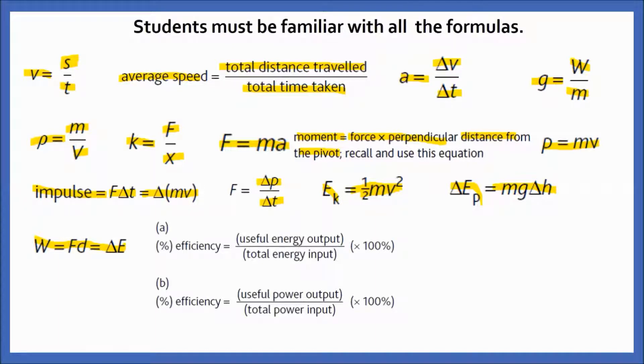Efficiency has two formulas: useful energy output / total energy input × 100, and in terms of power: useful power output / total power input × 100. Remember, total energy or total power must be in the denominator, that is the higher value must be below. Power has two formulas: work done / time taken, and ΔE / time taken.